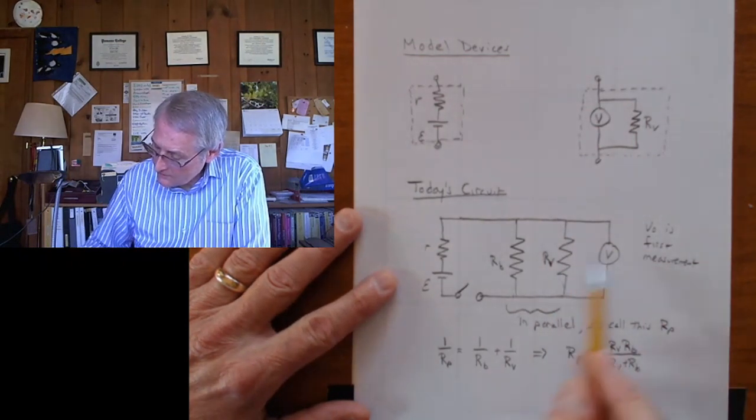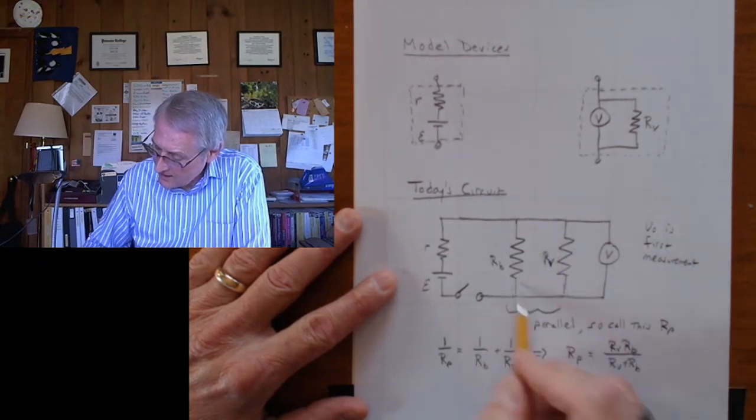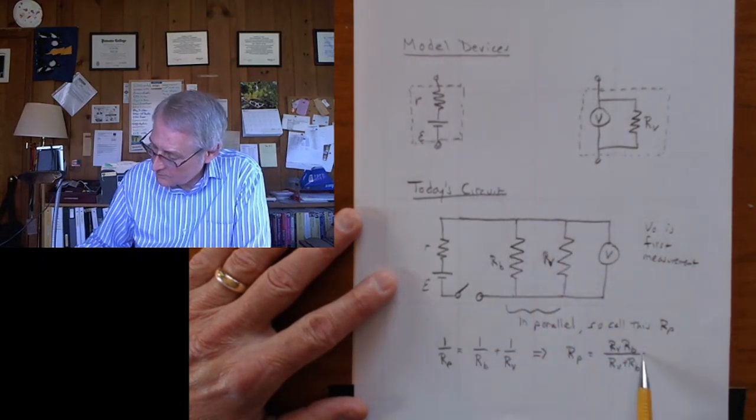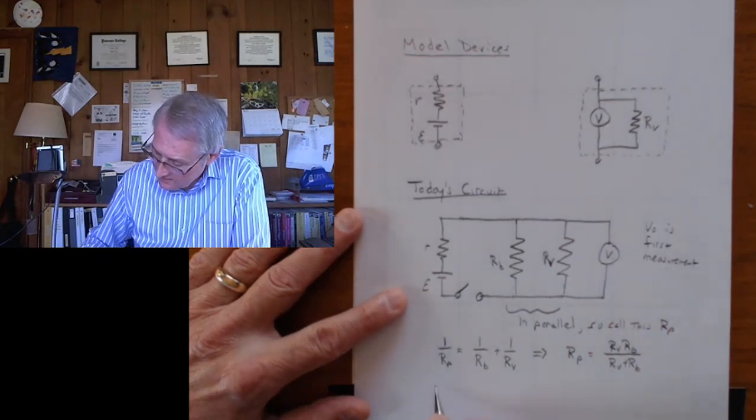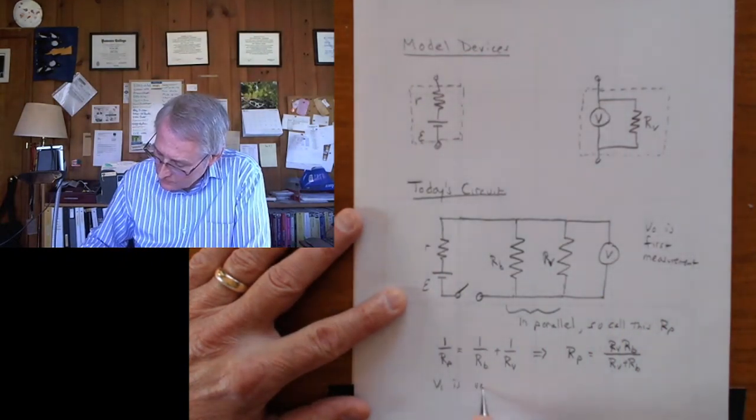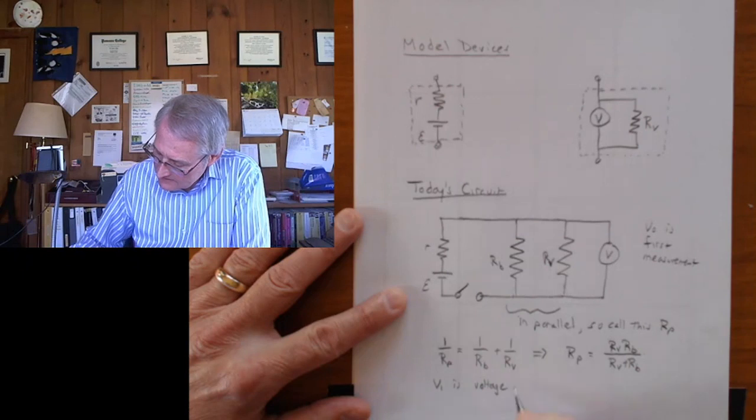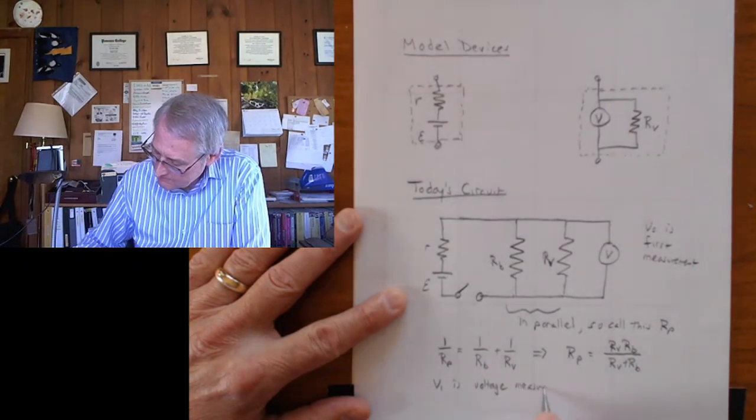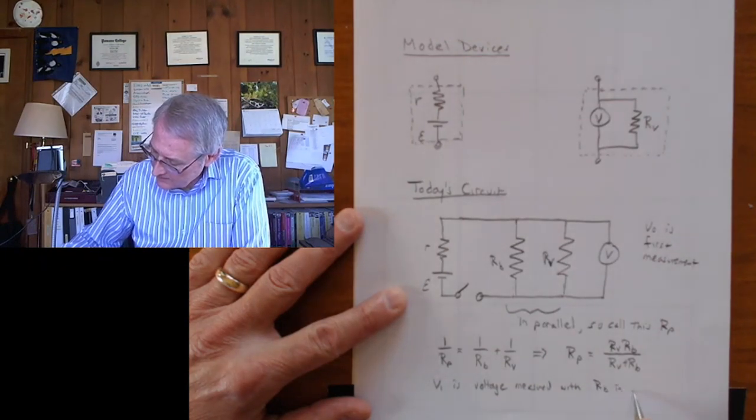So in the formula, we'll use RP for the parallel combination of both of these, and we have to calculate this. Now we'll measure the voltage, V1 is voltage measured with RB in place.